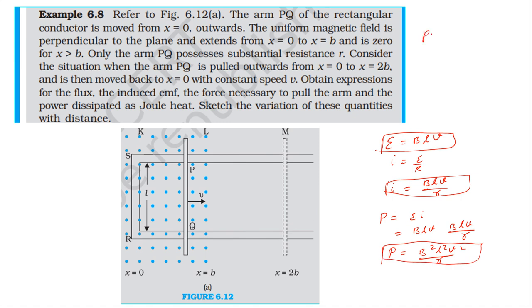Power equals force times velocity. Therefore force equals power divided by velocity. Force equals B squared L squared v squared divided by r, divided by v. So force equals B squared L squared v divided by r.